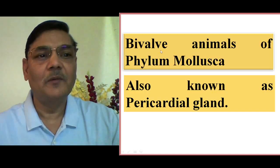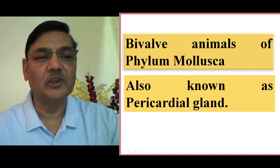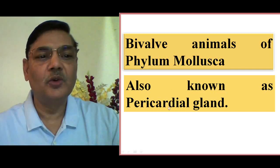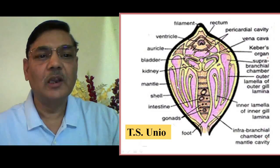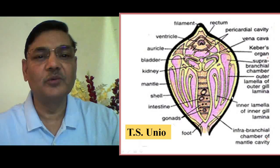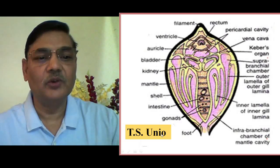Bivalve animals of phylum Mollusca possess this specific organ, and this particular organ — Keber's Organ — is also known as the pericardial gland. We can get an idea about this structure from this transverse section, which is a transverse section of Unio.